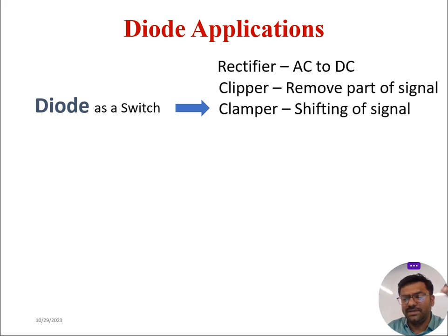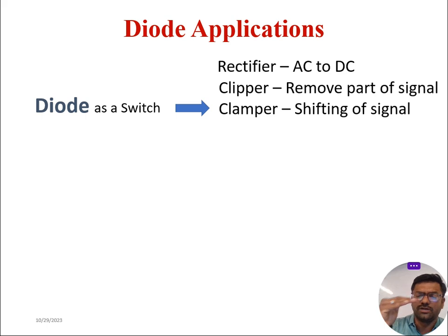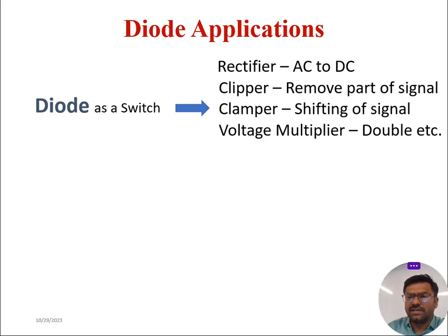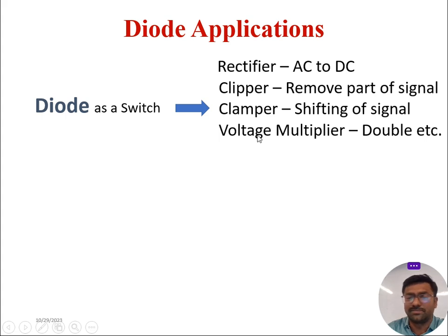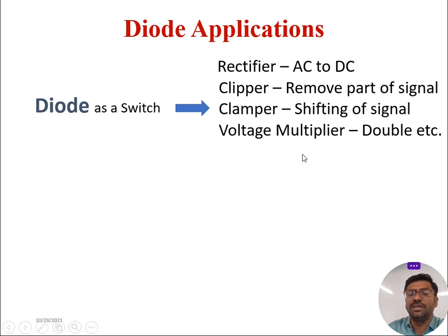That clamping may not be a complete shift; it can also shift up to a particular level of voltage. Other than this, diode as a switch application will give us other advantages like voltage multipliers — like the doubler, tripler, quadrupler — whatever it is, meaning voltage multiplication happens with respect to the peak value of an AC signal applied to the multiplier.